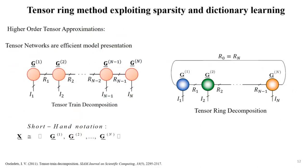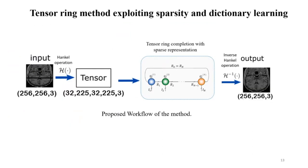One motivation for hankelization is that we use tensor networks—specifically tensor train and tensor ring—which work well for higher-order data. In tensor train decomposition, a tensor is decomposed into N core tensors with sequential contractions, where the first and last core tensors are matrices. Tensor ring decomposition is a generalization of tensor train. In our method, we adopt tensor ring decomposition, although tensor train can also be used.